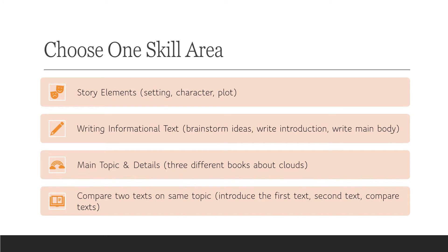Once you look at those three standards, you're going to choose one skill area, and all three lessons are going to be on this same skill. For example, you could choose story elements, and then your three lessons would be: the first lesson teaching setting, the next lesson teaching character, and the next lesson teaching plot.